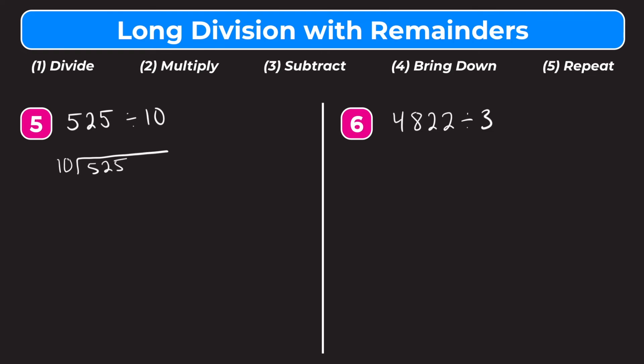Step 1 is divide. We ask ourselves how many whole groups of 10 go into 5. Well, 5 is smaller than 10, so none. We move over to the 2 and ask how many whole groups of 10 go into 52. That's going to be 5, so we write the 5 up here. Step 2 is multiply: 5 times 10 is 50. Step 3 is subtract: 52 minus 50 equals 2. Step 4 is bring down — we bring down our 5. Now we repeat: how many whole groups of 10 fit into 25? That's going to be 2. Step 2 is multiply: 2 times 10 is 20. Step 3 is subtract: 25 minus 20 equals 5.